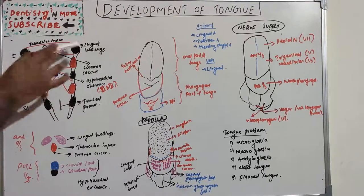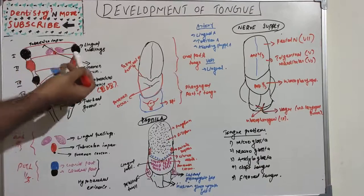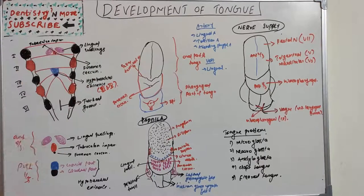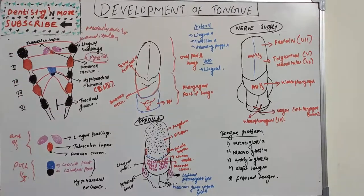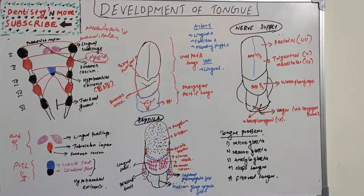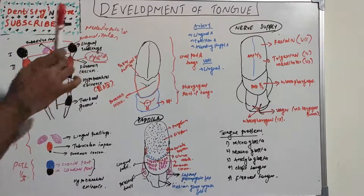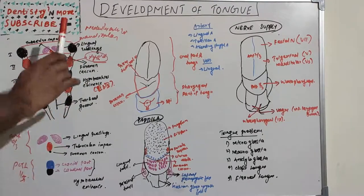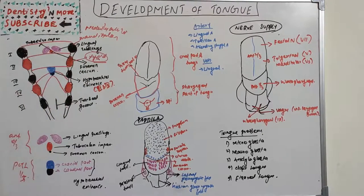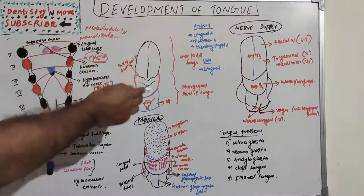The first arch is known as the mandibular arch — it is always bilateral. The second is the hyoid arch. From the mandibular arch, various structures like the mandible, malleus, and incus arise. The second arch cartilage is known as Reichert's cartilage, giving rise to various bones and ligaments. The tongue develops from the pharyngeal arches mainly in two portions: anterior two-thirds and posterior one-third.